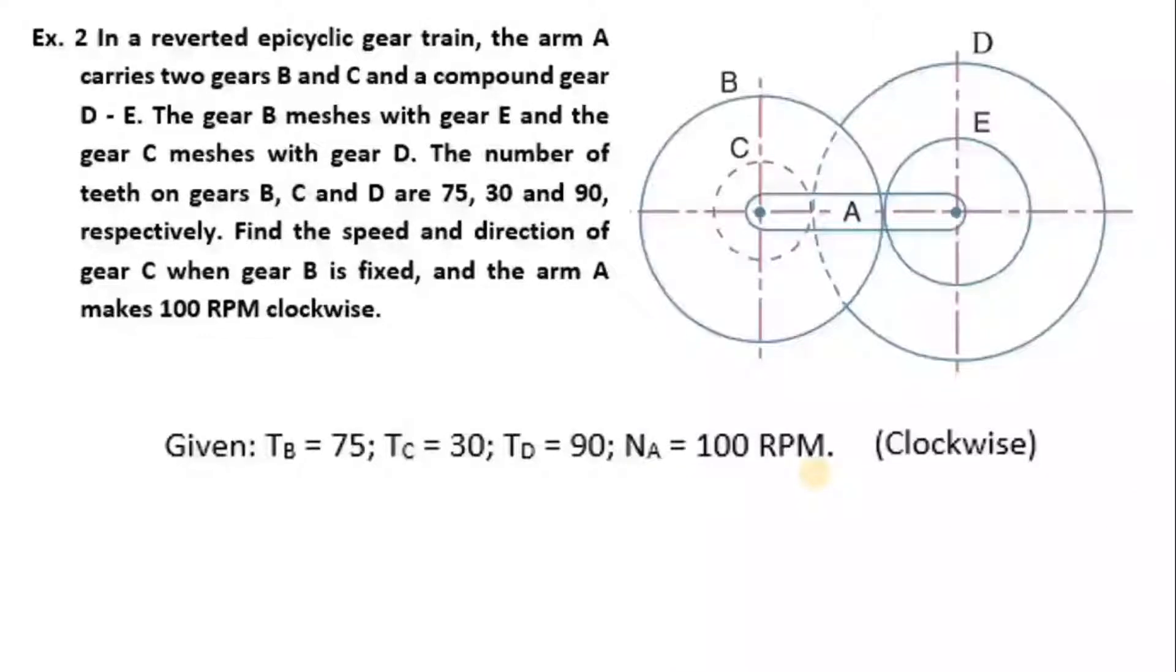the arm A carries two gears B and C and a compound gear DE. The gear B meshes with gear E and gear C meshes with gear D. The number of teeth on gear B, C and D are 75, 30 and 90 respectively.